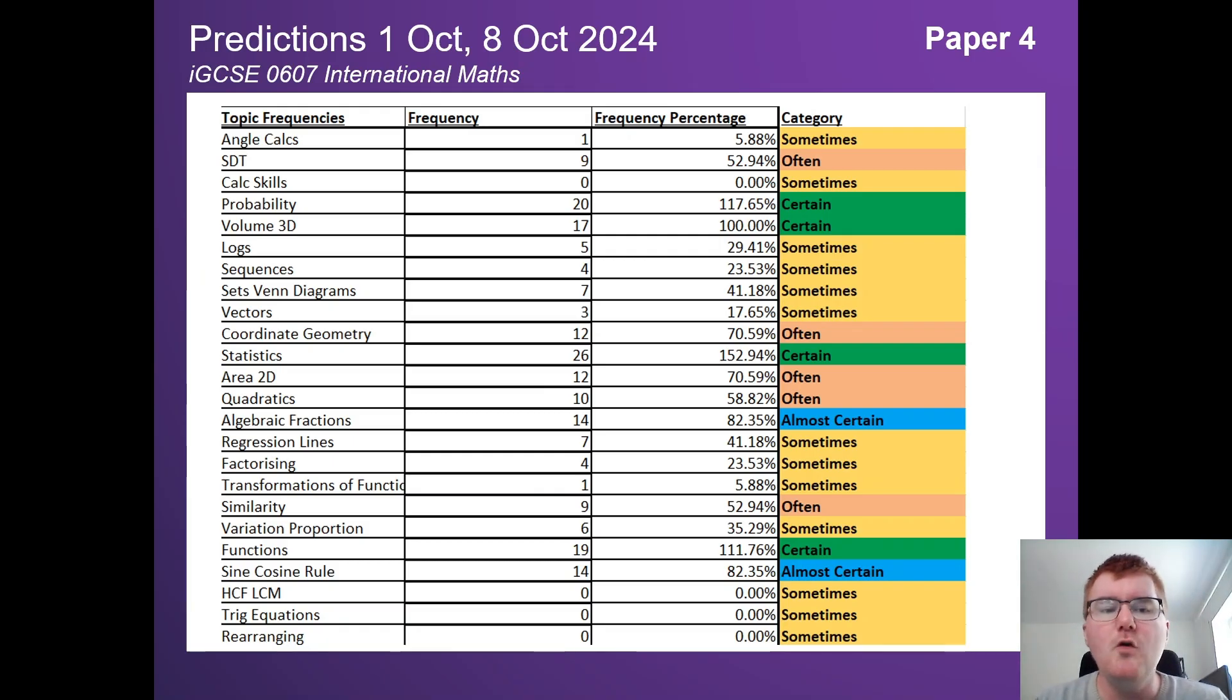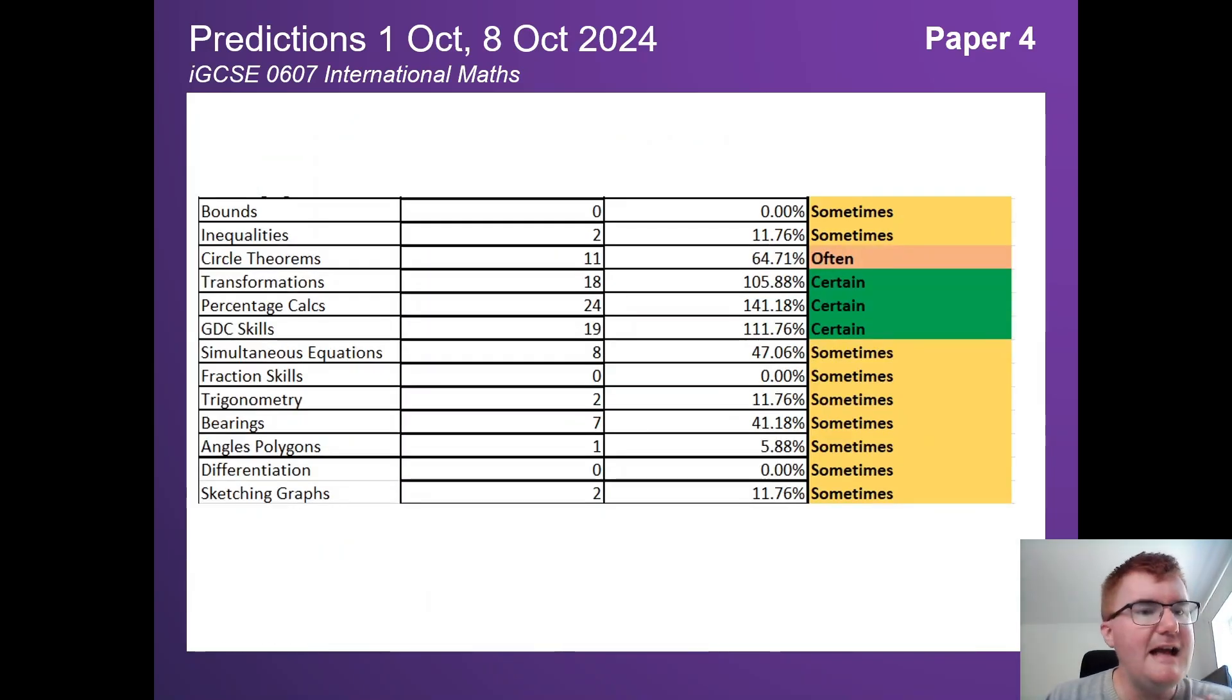You can see all the different features here. Algebraic fractions sneaking in now at 82%, something to be aware of. Most of these topics I've covered in this particular video. You've got the extra section here as well with these big three in the middle. But don't forget things like circle theorems. We haven't talked about it in this video, but it's probably going to come up on one of the papers.